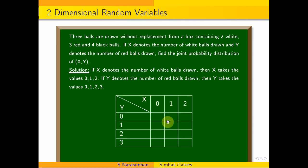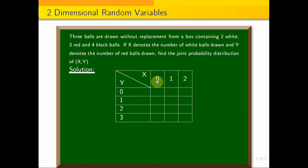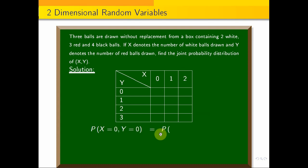We have one table for the joint probability distribution with nine values. X takes values 0, 1, 2 and Y takes values 0, 1, 2, 3. The probability of X equal to 0 and Y equal to 0 — we need to find each cell value.